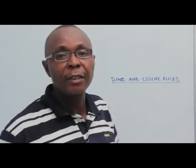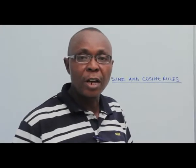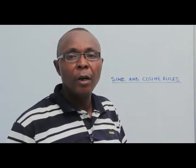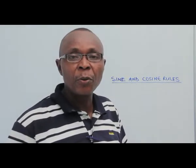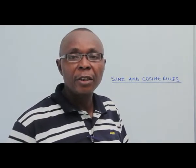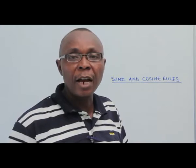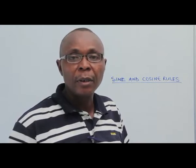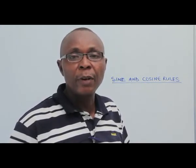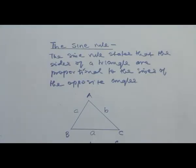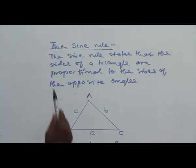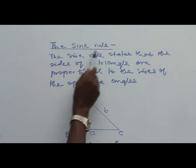Today we are going to look at sine and cosine rule under trigonometry. We are looking at the situation where the triangles are not right-angled — how we can find the sizes and the angles. We start our discussion by looking at the sine rule.